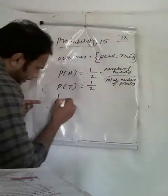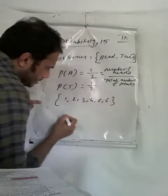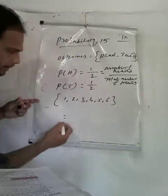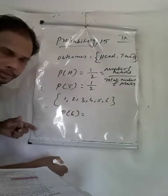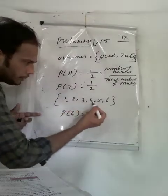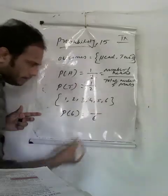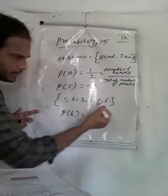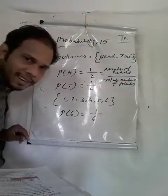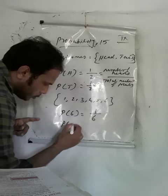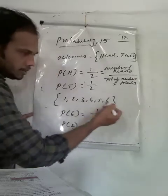So a die has faces 1, 2, 3, 4, 5, 6. What is the probability of getting 6? Total faces are 6. How many 6s are there? Only one. So the probability of getting 6 is 1 by 6. Similarly, the probability of getting 2 — how many 2s are there? Only one. So that is also 1 by 6.